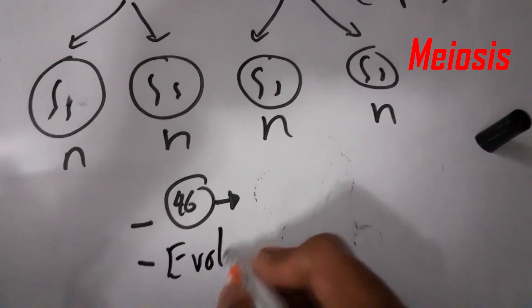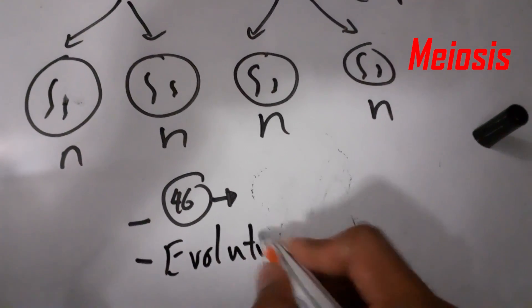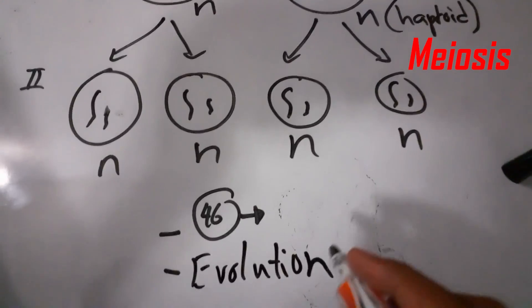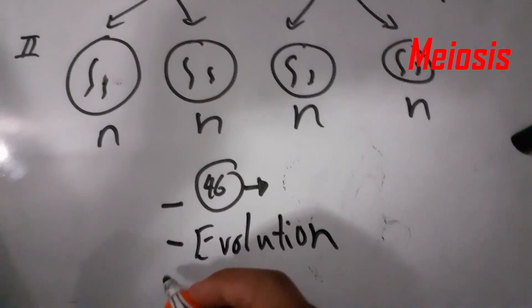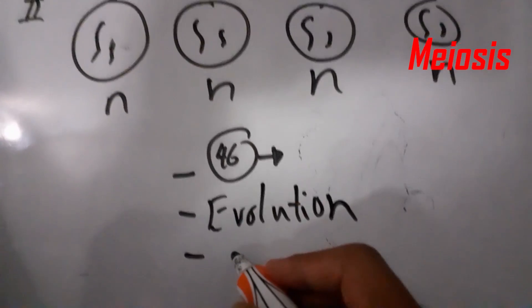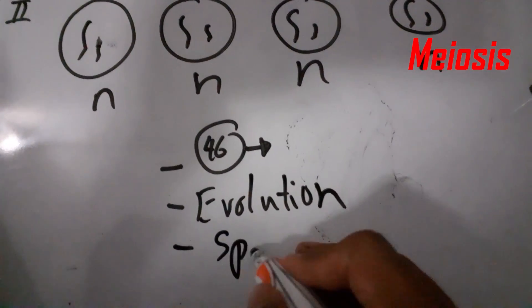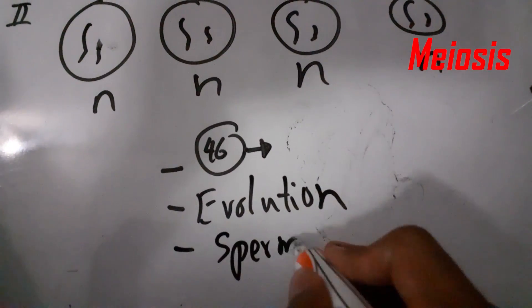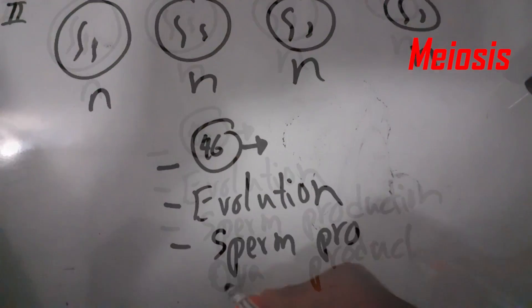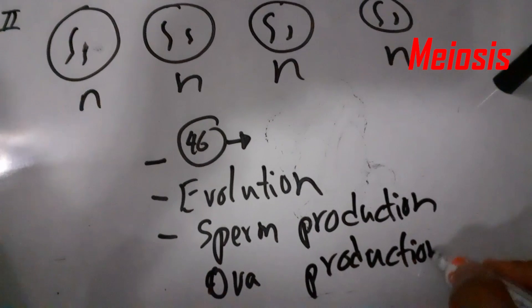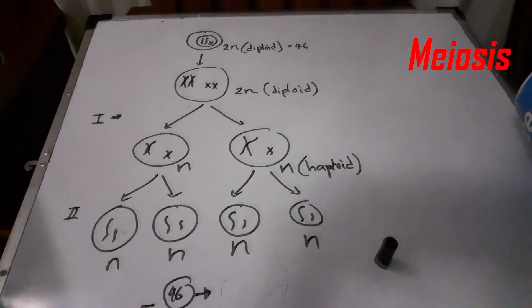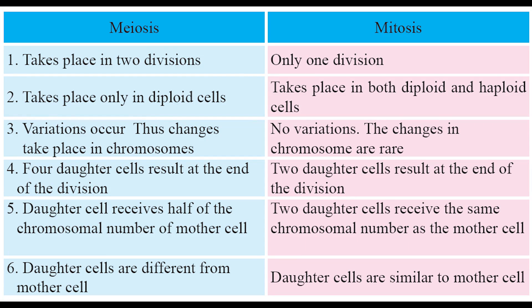This meiosis division takes place in sperm production and egg production. As you can see in the table, there are some differences between meiosis and mitosis.